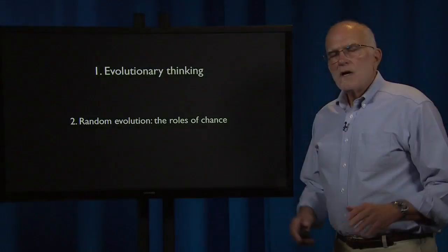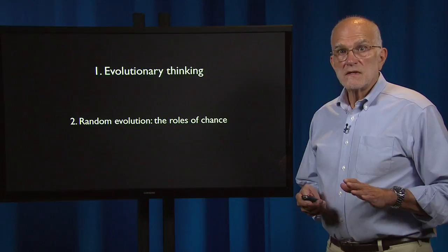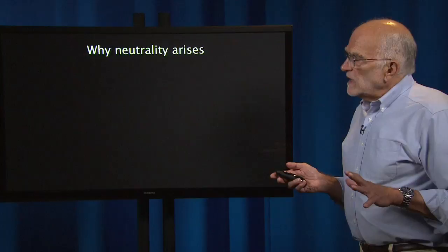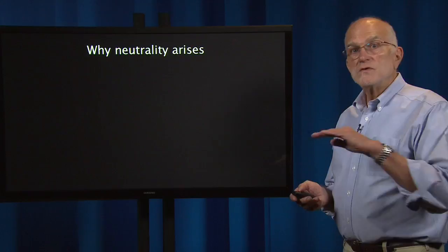The second major concept in evolutionary thinking is randomness — the role of chance in evolutionary events. Random things are also referred to as neutral processes. Neutrality means selection is not operating; things are neither being selected for nor against. They're just neutral.